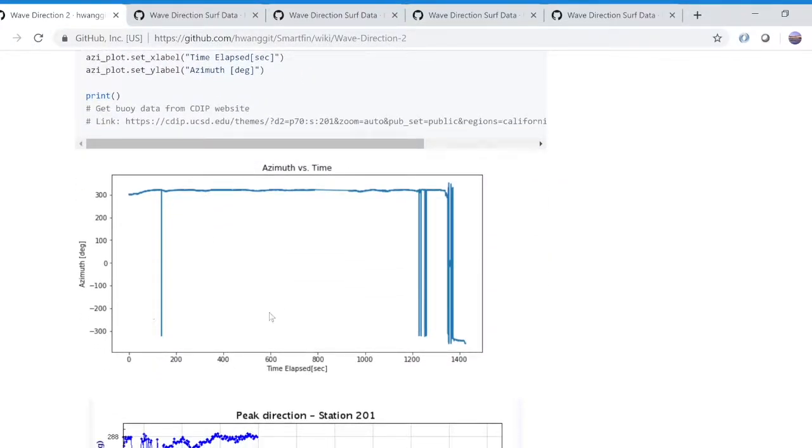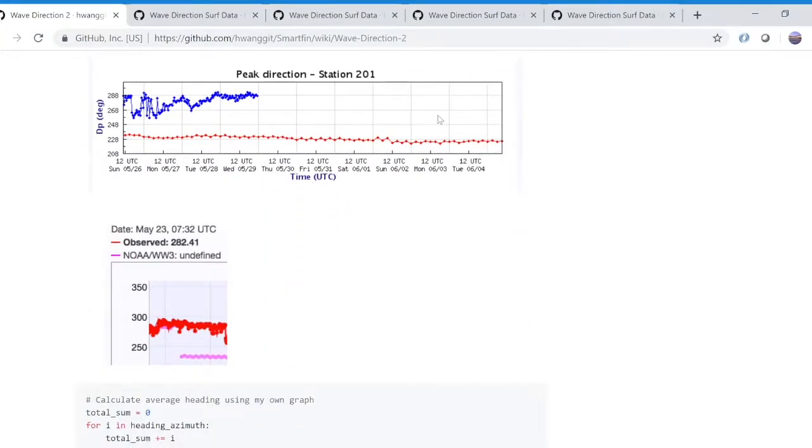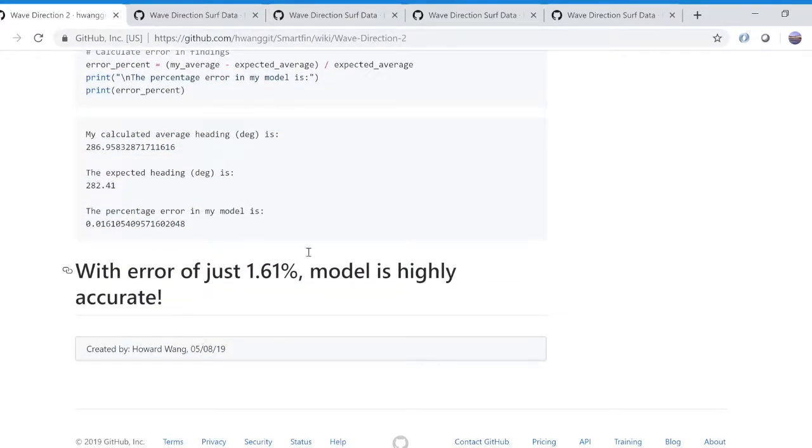To test the accuracy of my model, I used the SmartFin data we collected on May 15th and compared it to CDIP's standardized results for the same day. Overall, the error was only 1.61%.